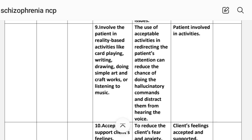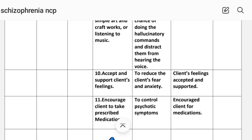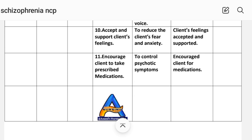Ninth intervention: involve the patient in reality-based activities like card playing, writing, drawing, simple art and craft work, or listening to music — rationale: use of acceptable activities in redirecting attention can reduce the chance of following hallucinatory commands; implementation: patient involvement in activities. Tenth: accept and support the client's feelings — rationale: to reduce the client's fear and anxiety; implementation: client's feelings accepted and supported. Eleventh: encourage the client to take prescribed medications to control psychotic symptoms; implementation: client encouraged to take medications. Evaluation for Care Plan 1: hallucinations decreased.